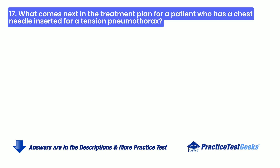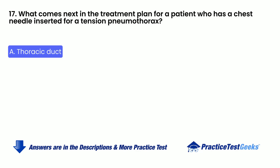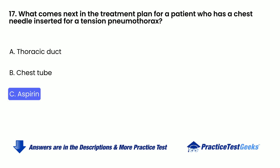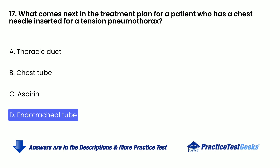What comes next in the treatment plan for a patient who has a chest needle inserted for a tension pneumothorax? A. Thoracic duct. B. Chest tube. C. Aspirin. D. Endotracheal tube.